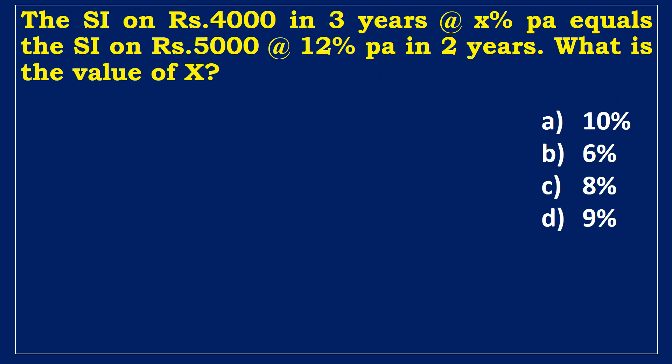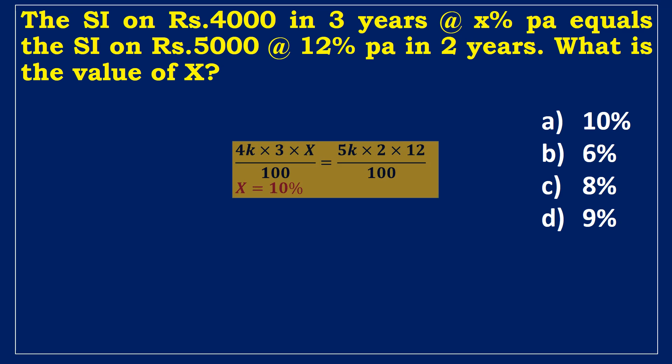Fourth example. The simple interest on 4000 rupees in 3 years at x% per annum equals the simple interest on 5000 rupees at 12% per annum for 2 years. What is the value of x? Setting up the equation: 4000 × 3 × x% = 5000 × 2 × 12%. Simplifying gives x = 10%.